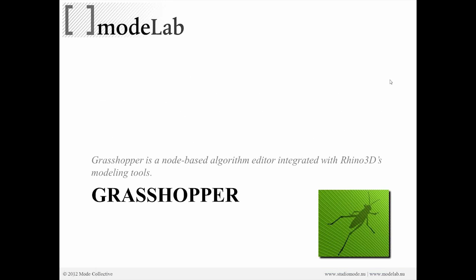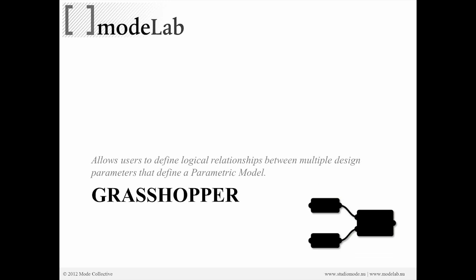We're going to be using Kangaroo, the add-on for Grasshopper we're focusing on today. Grasshopper is a node-based algorithm editor integrated with Rhino3D's modeling tools. It allows us to define logical relationships between multiple design parameters, creating a parametric model that changes based on our inputs. This falls within the visual programming paradigm, giving beginners a low entry point to develop complex relationships, while experienced users can go deeper into building robust and interesting models.